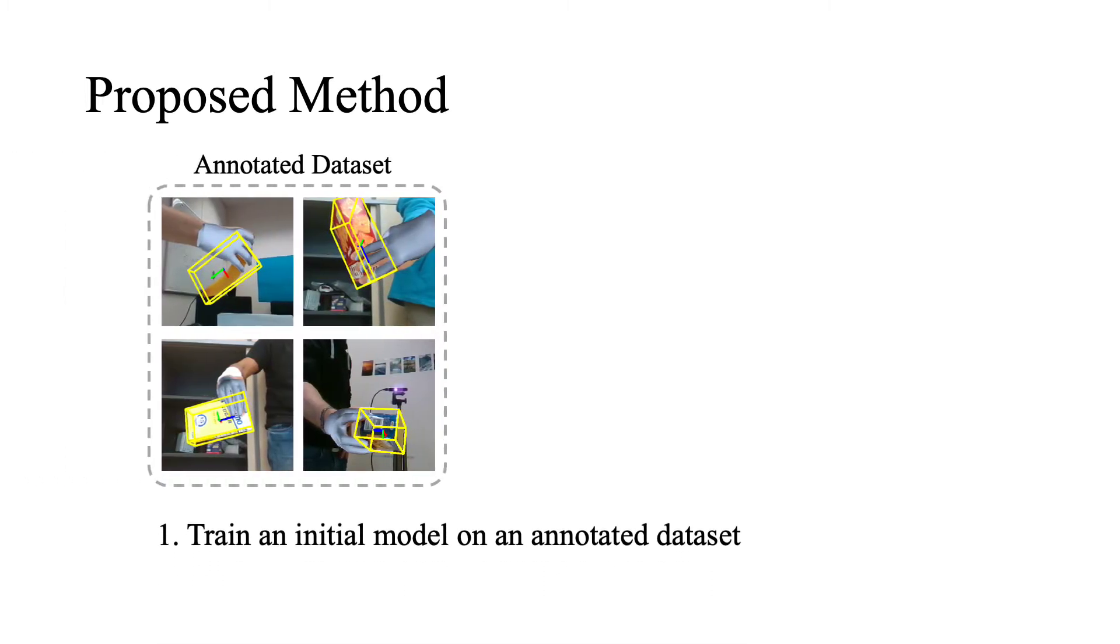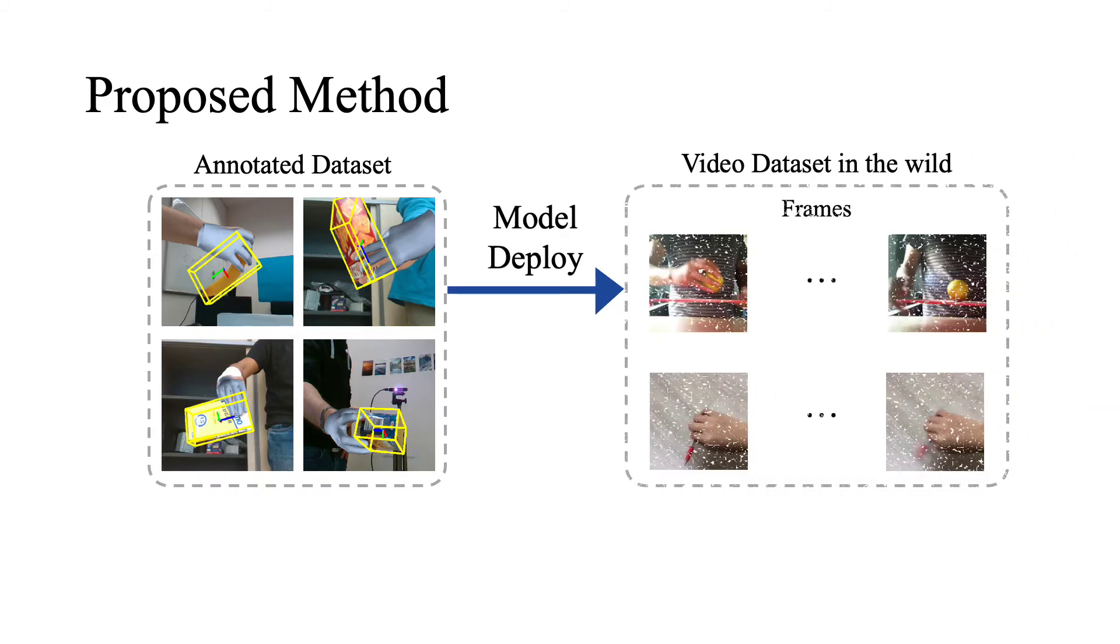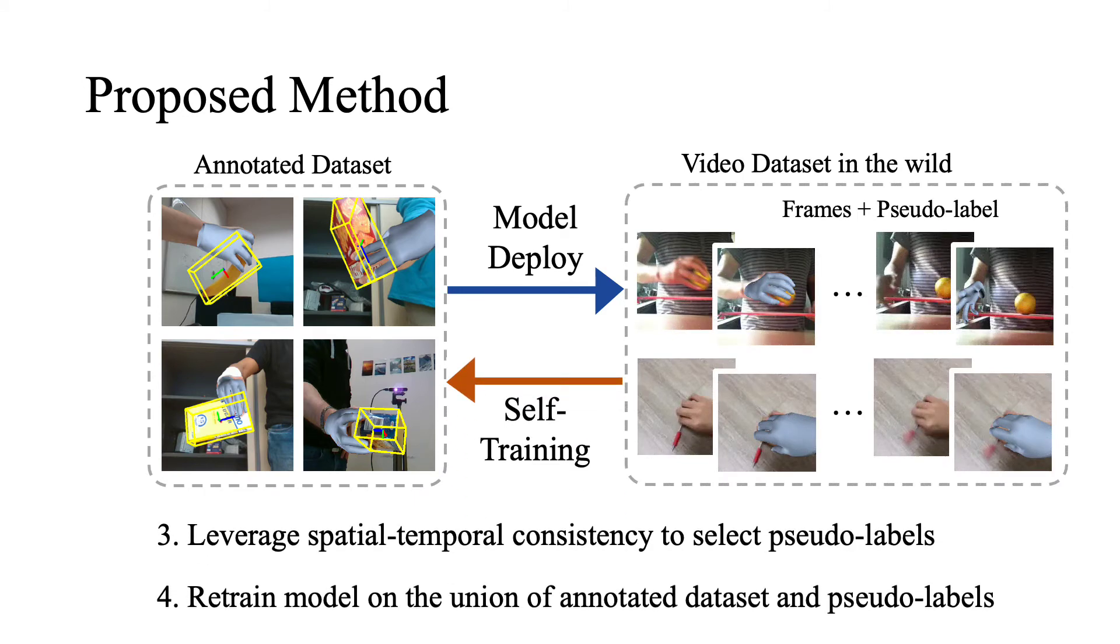The proposed semi-supervised learning framework is as follows. We train an initial model on an annotated dataset. Then we deploy it on a large-scale video dataset to collect pseudo-labels. We leverage spatial temporal consistency to select confident pseudo-labels for self-training.